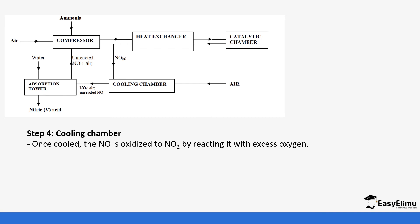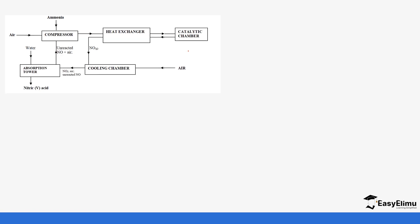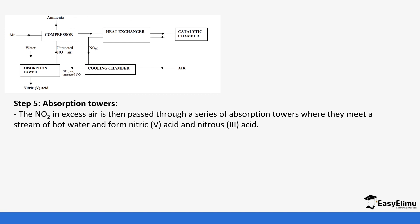After the heat exchanger, the products are taken to the cooling chamber where nitrogen monoxide (NO) is oxidized to nitrogen dioxide (NO₂). Air is bubbled into the cooling chamber for this oxidation purpose. The equation is: nitrogen monoxide reacts with oxygen to form nitrogen dioxide, which appears as brown fumes.